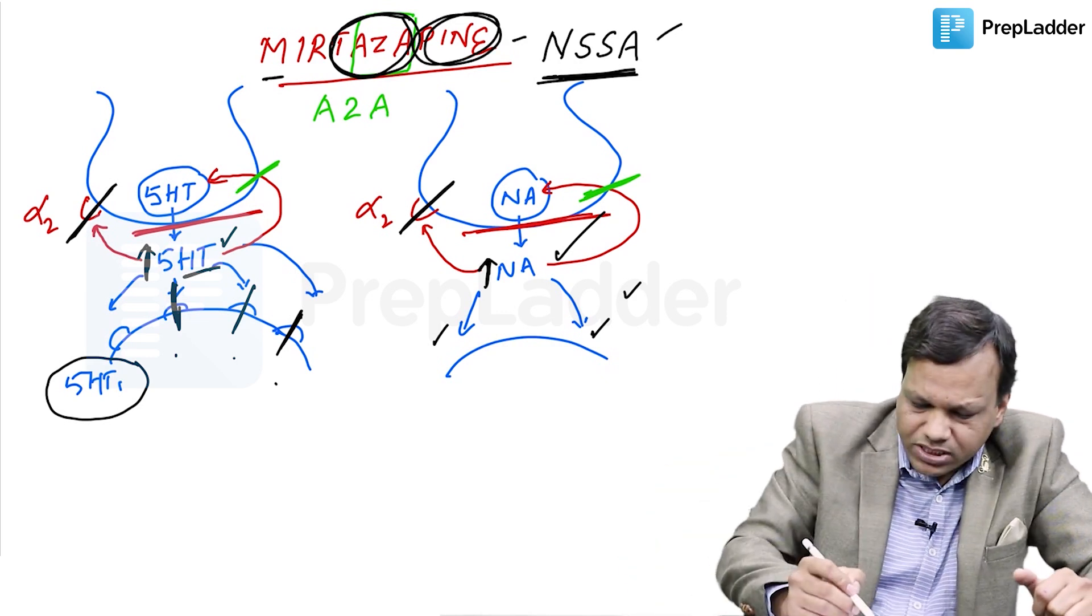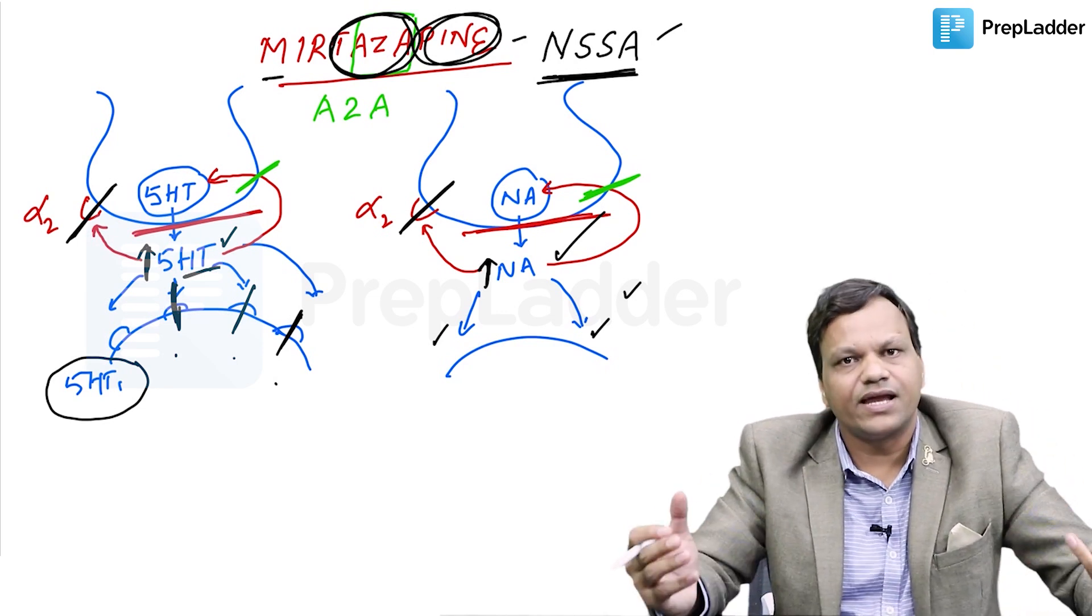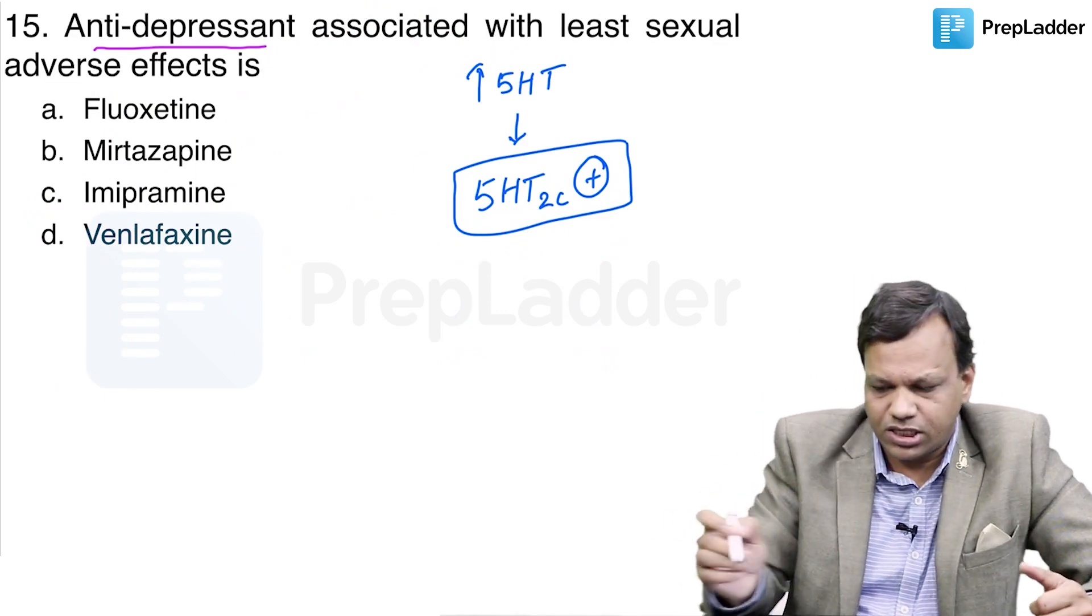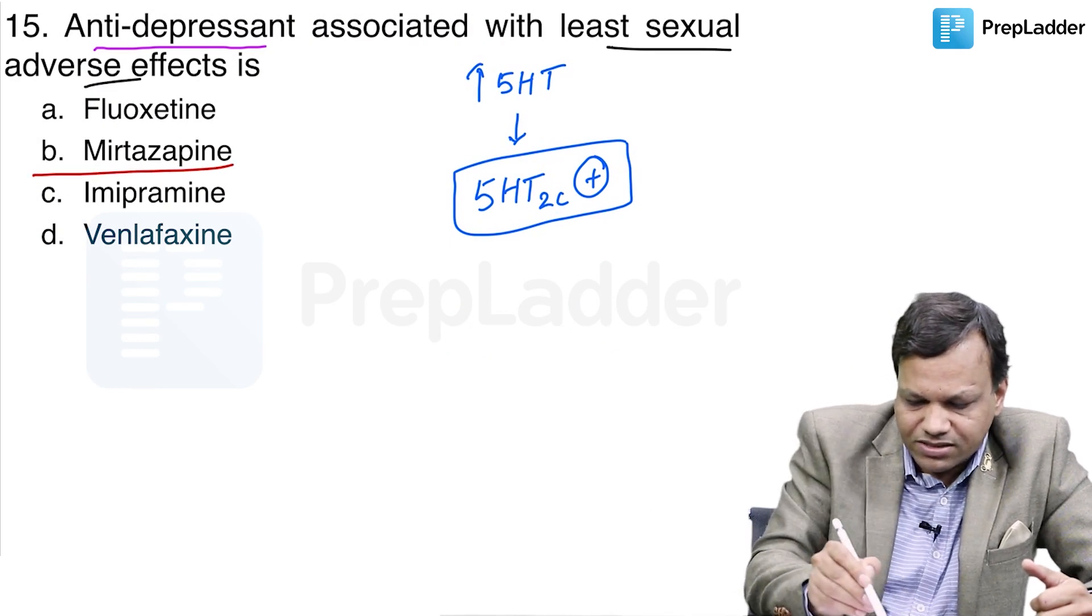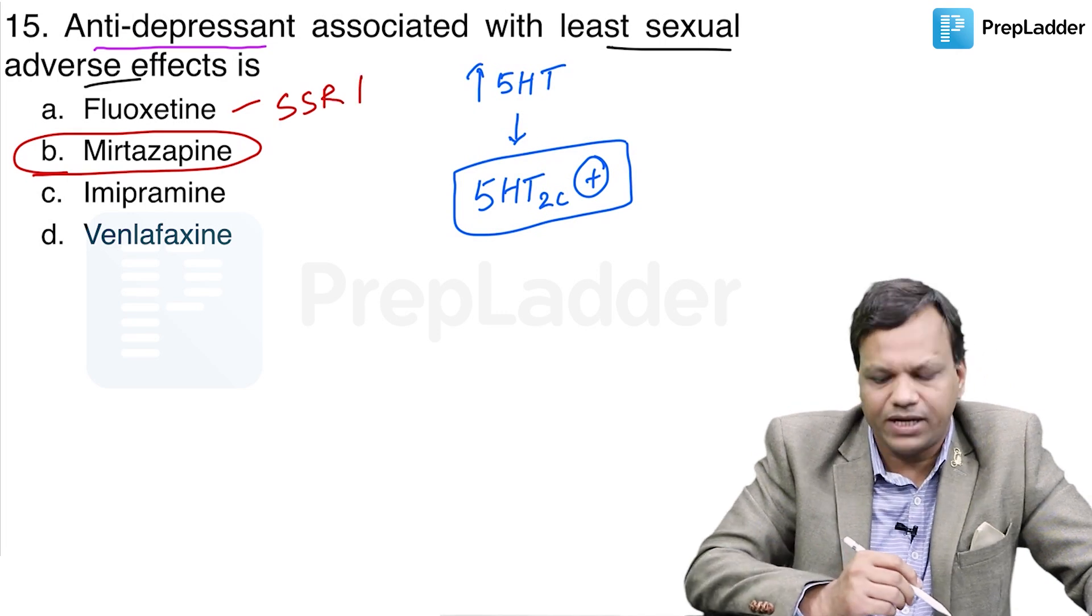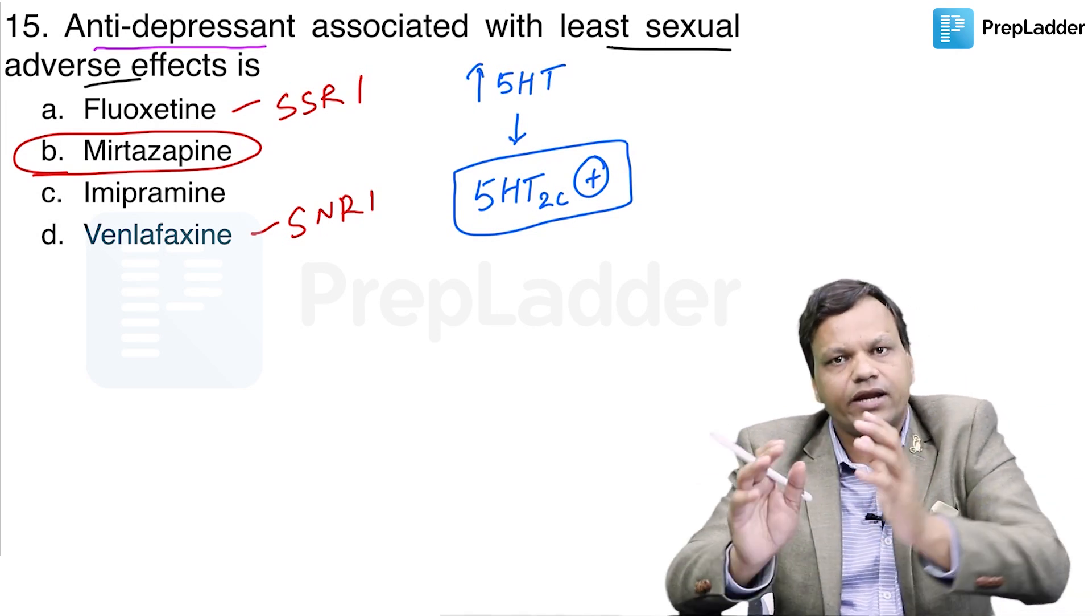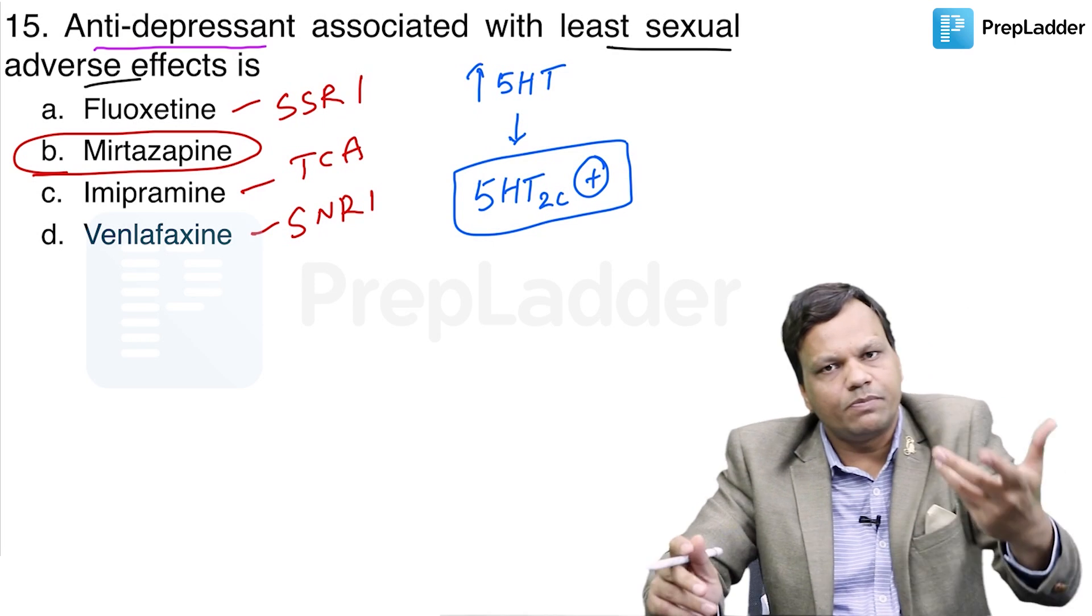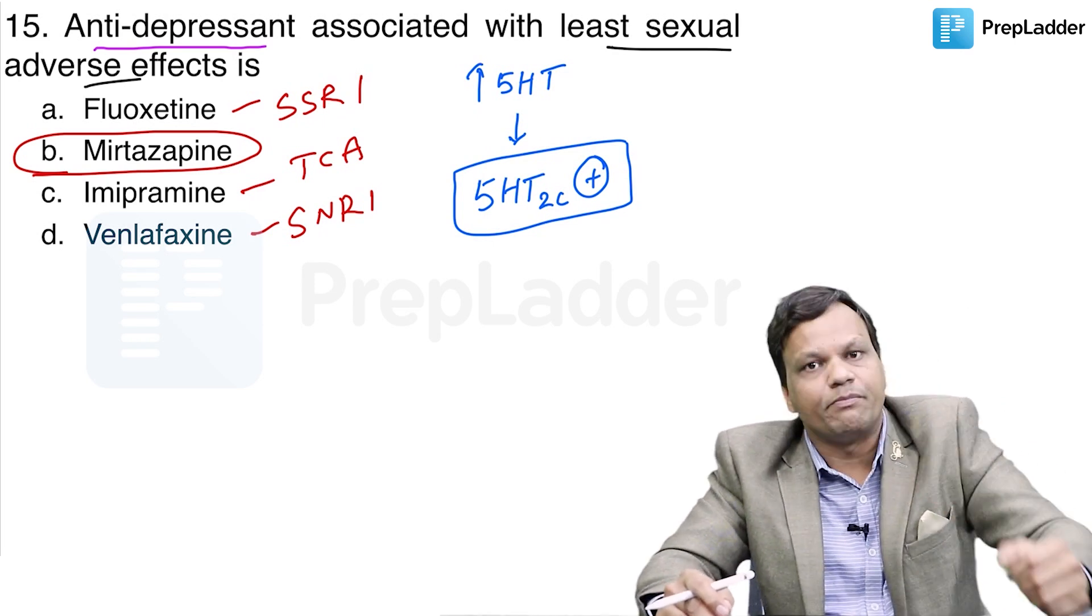Now, because it is blocking 5-HT-2, sexual adverse effects are less likely. That's why Mirtazapine is different from other antidepressant drugs. Coming to the question, which has least sexual adverse effects? The answer is Mirtazapine. Fluoxetine is SSRI, selective serotonin reuptake inhibitor. Venlafaxine is SNRI, serotonin and noradrenaline reuptake inhibitors. And imipramine is a tricyclic antidepressant. It also inhibits the reuptake of both serotonin and noradrenaline. The answer is Mirtazapine here.